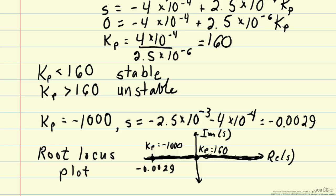But for any value of kp less than 160, we will have stability in our closed loop system. We will have bounded output in x for a bounded change in x set point.